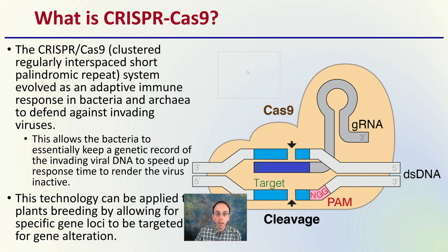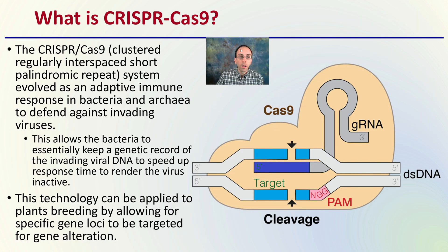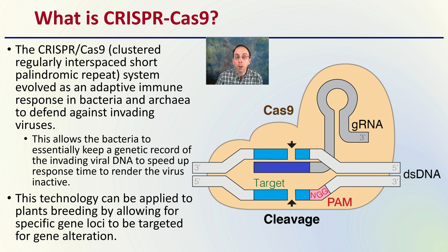So first off, what is CRISPR-Cas9? CRISPR is short for clustered, regularly interspaced, short palindromic repeats. This is a system that evolved as an adaptive immune response in bacteria and archaea to defend against invading viruses. This is something that occurs in nature. It allows the bacteria to essentially keep a genetic record of invading viral DNA to allow for a speed-up in response time to render a virus inactive.